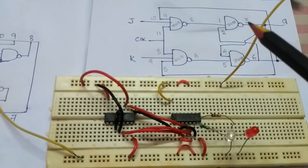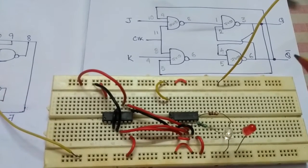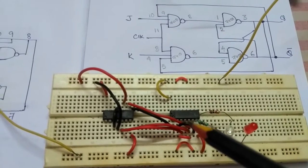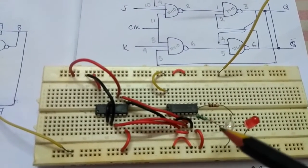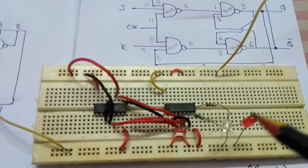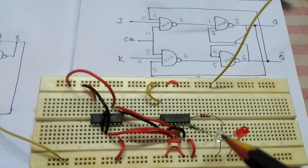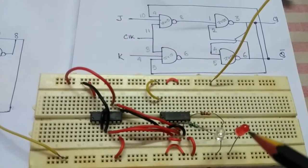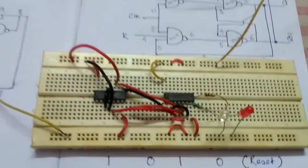You can see from pin 3 I have Q and from pin 6 I have Q bar. From pin 3 I have attached this LED via resistance and from pin 6 I have this red LED. Q is being denoted by this white LED and Q bar is denoted by this red LED.